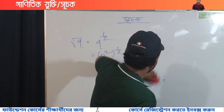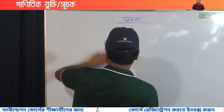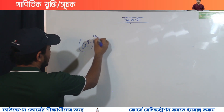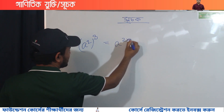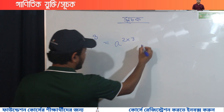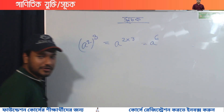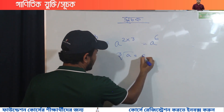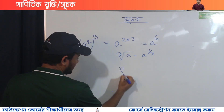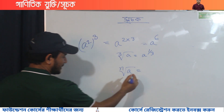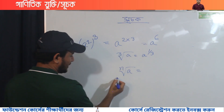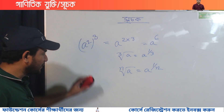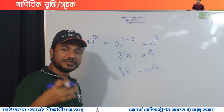We are going to use: a to the power 1 by 3 means the cube root of a. The n-th root of a equals a to the power 1 by n. When a to the power 1 by n, then we can solve the math.